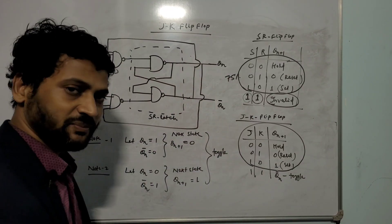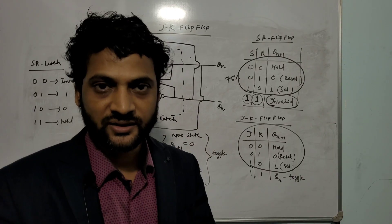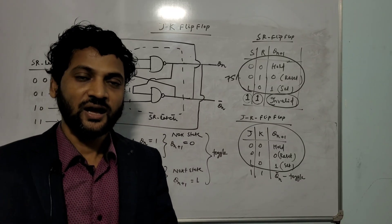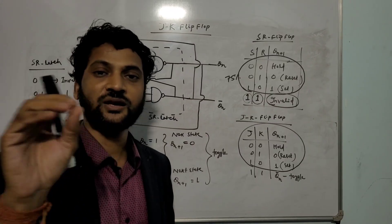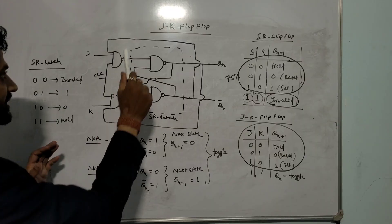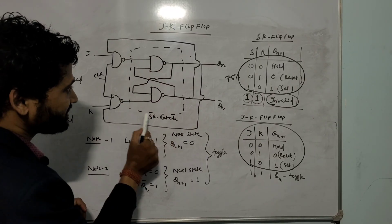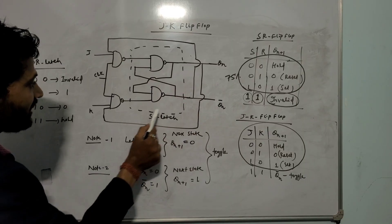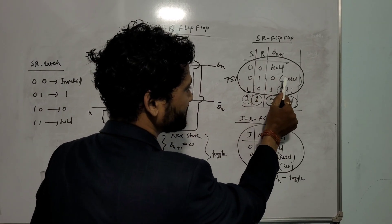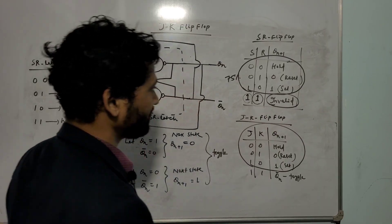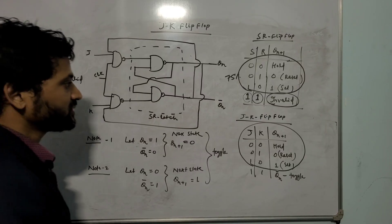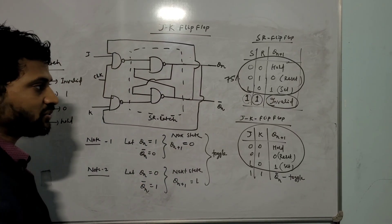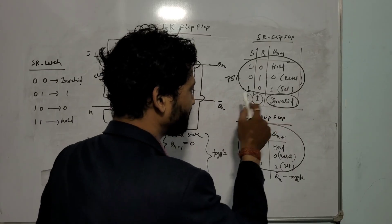Coming to the JK flip-flop. What is JK flip-flop? It is a 2-input and 2-output sequential circuit. Inputs are J and K; outputs are Q(N) and Q(N) bar. The construction and principle of JK flip-flop is almost similar to SR flip-flop — almost 75% the same. In the fourth state of SR flip-flop, if input is 1,1, the output was invalid. To solve this problem, we use the JK flip-flop with toggle.